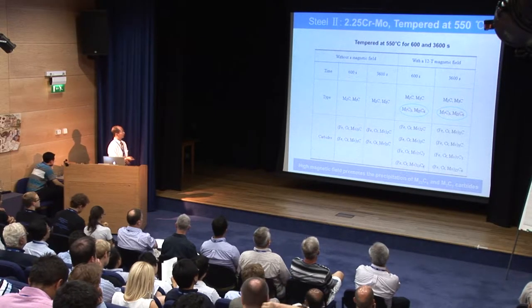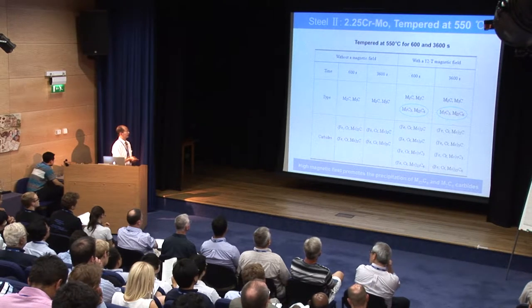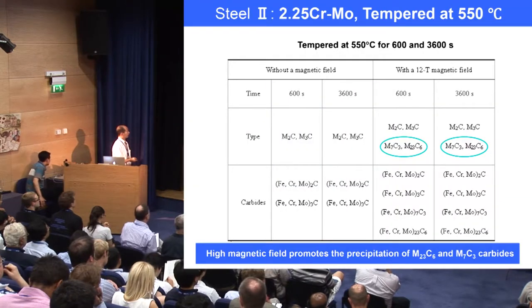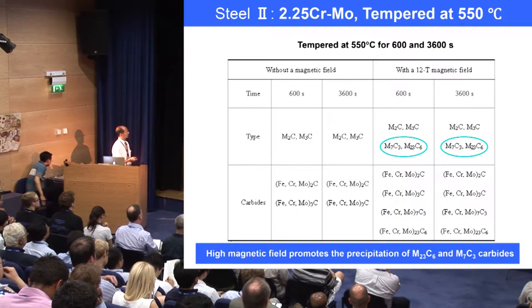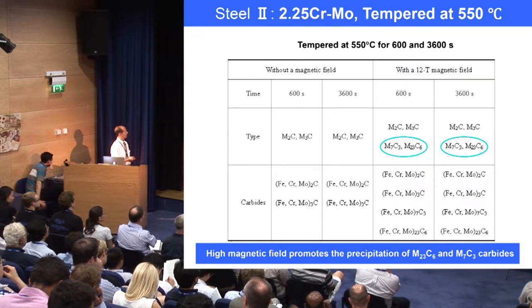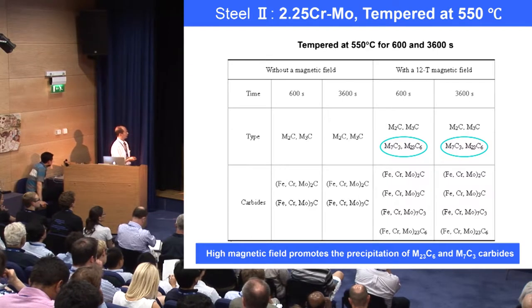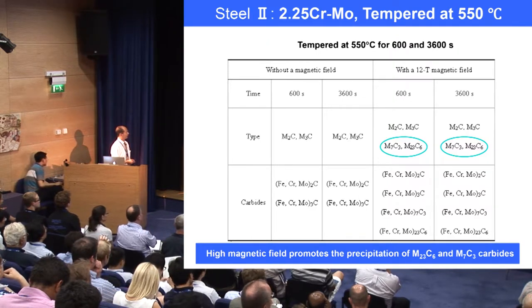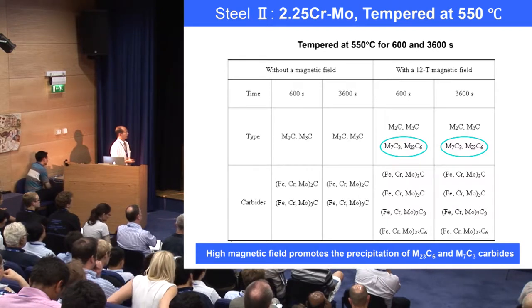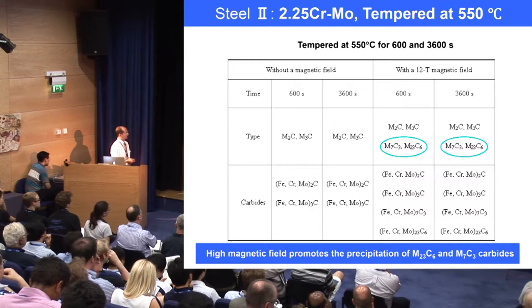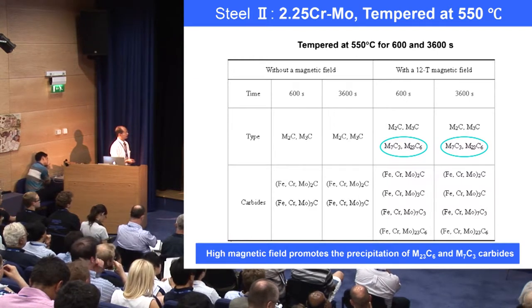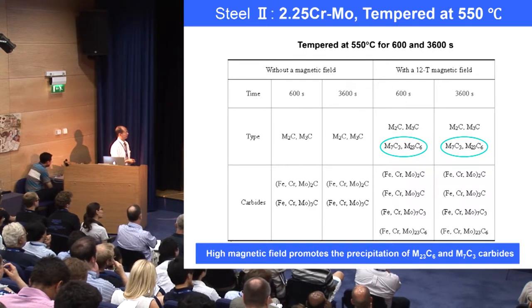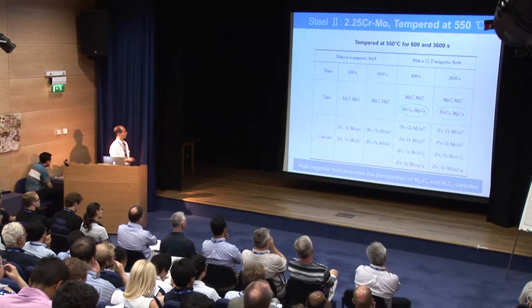For the second alloy, we performed martensitic tempering at different temperatures. This table shows the summary of the heat treatment at short and long holding times. When the magnetic field is not applied, at short and long holding times we only see M2C and M3C precipitated in the specimen. However, when a high magnetic field is applied, M7C3 and M23C6 are promoted in this specimen.